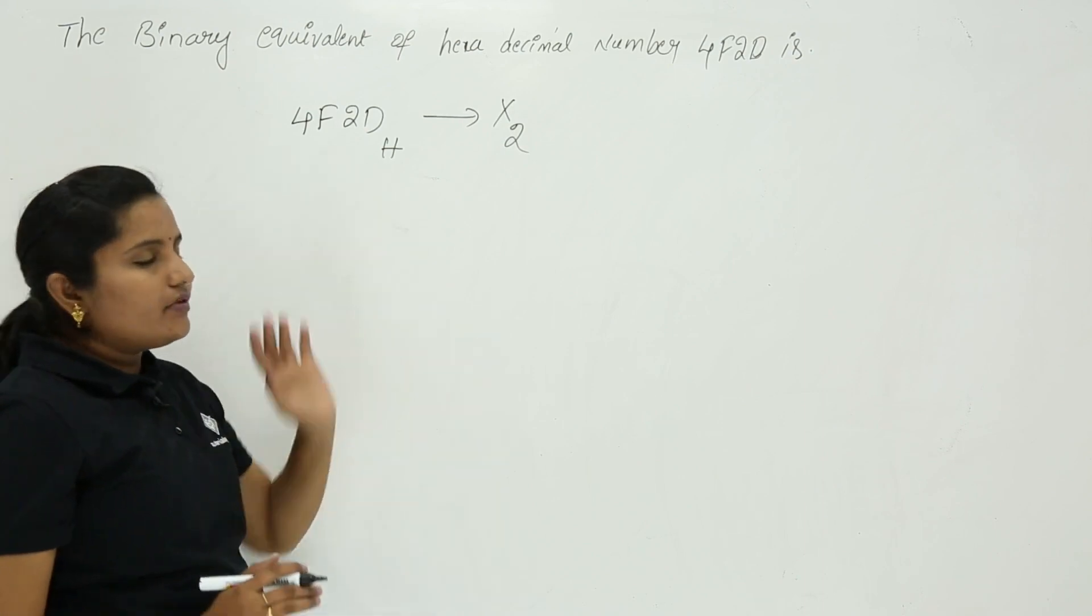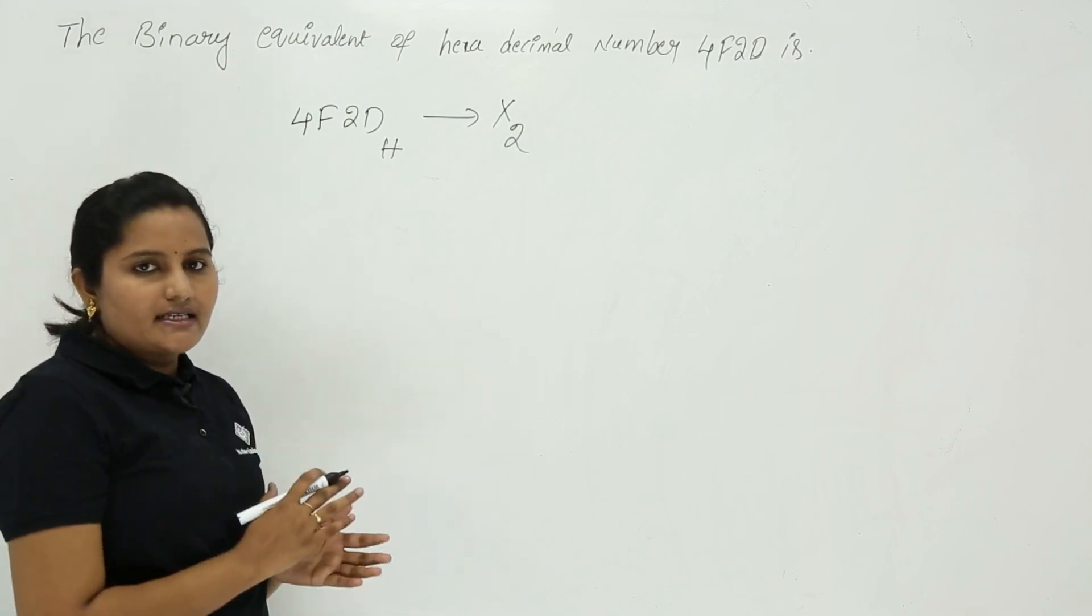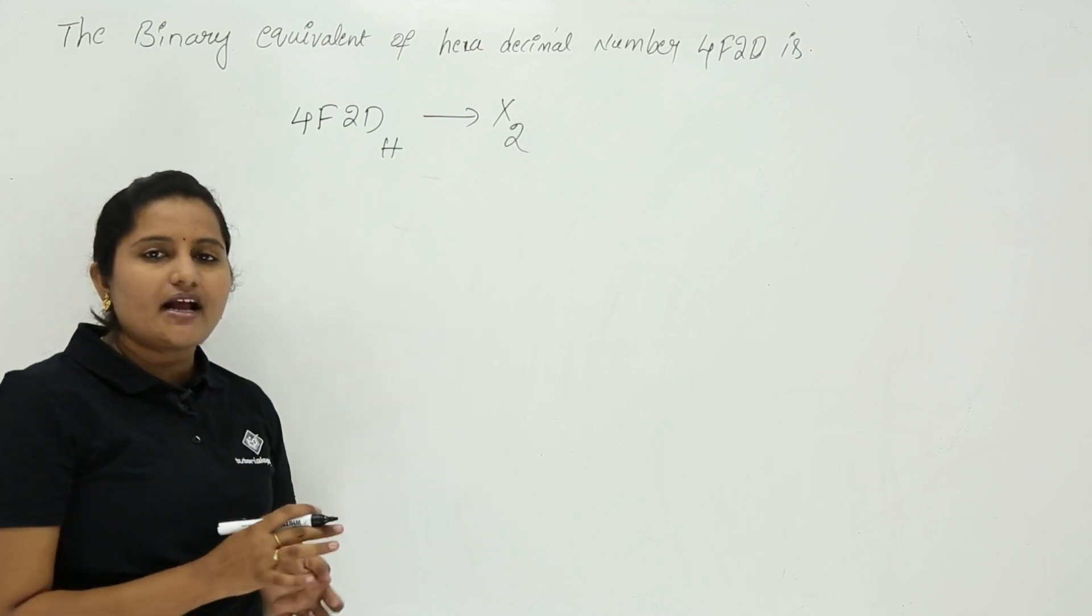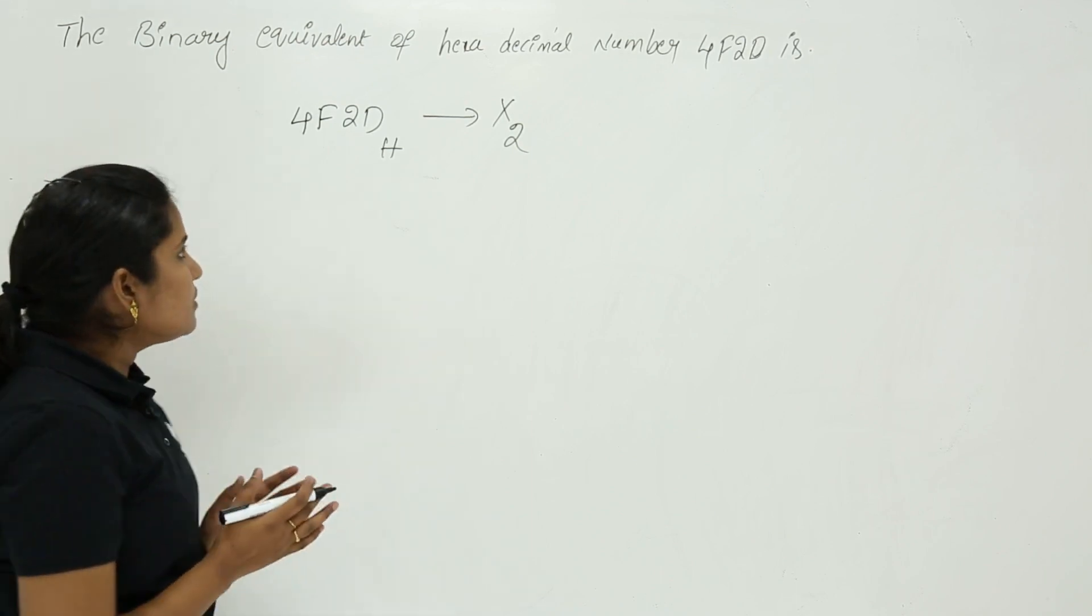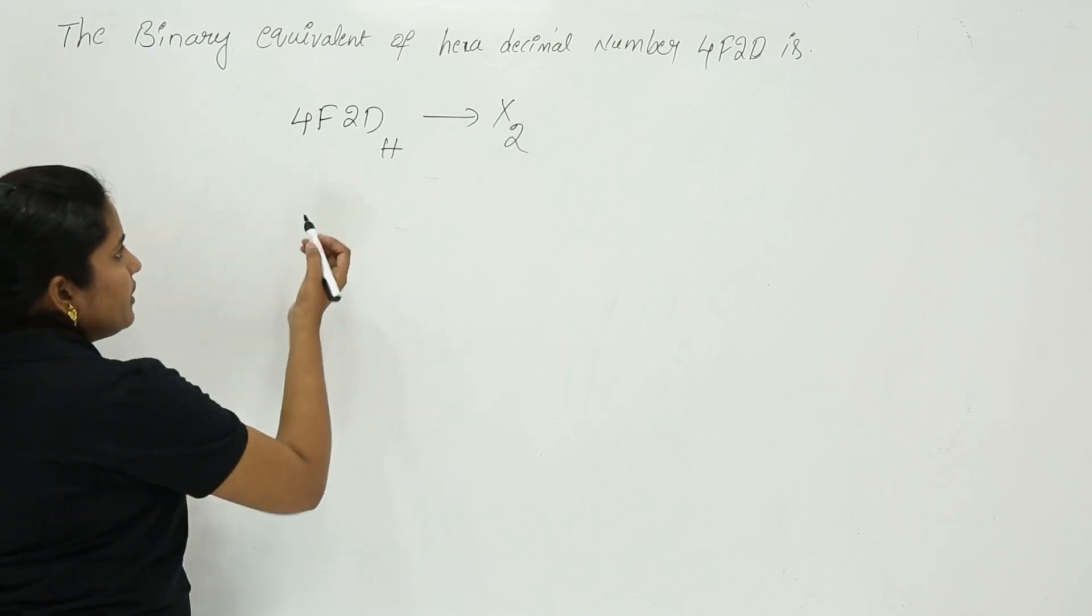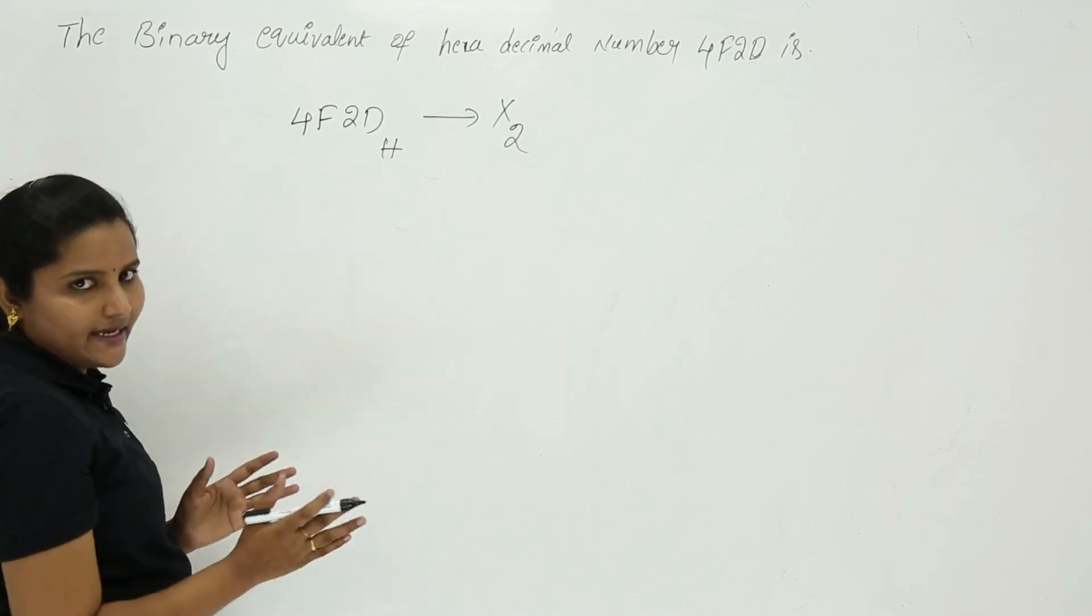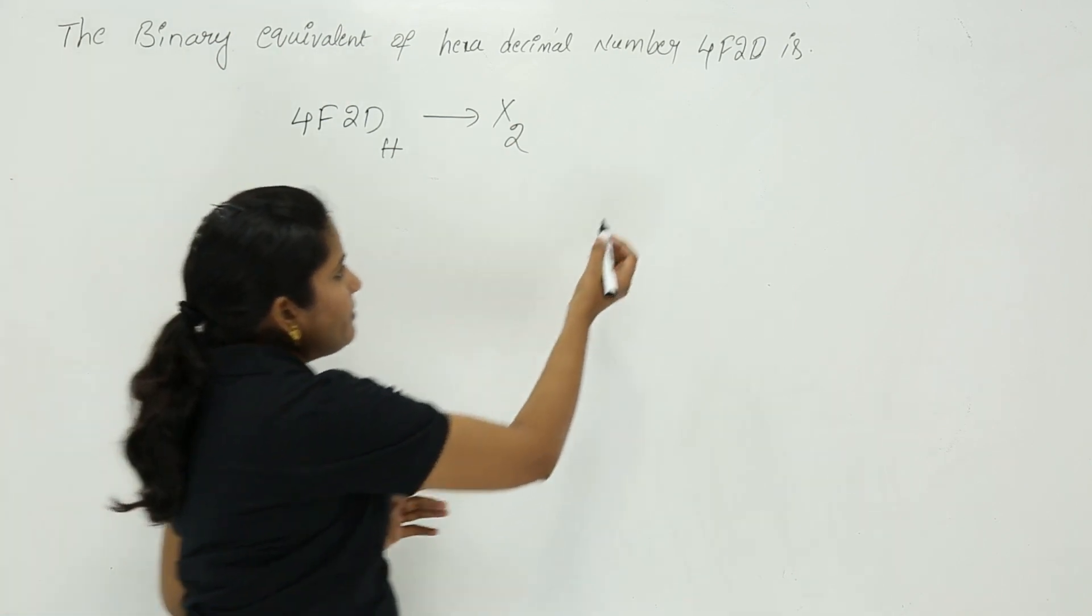Whenever you are converting from hexadecimal to binary or binary to hexadecimal, we have direct decoding. When converting from hexadecimal to binary, you need to remember the 8-4-2-1 code.